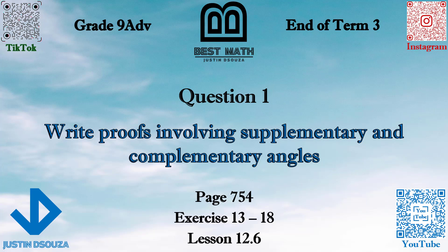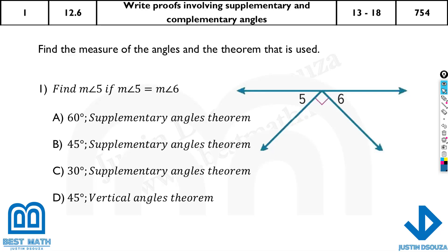In this question, we will use complementary and supplementary theorems to solve angles. We have been told here to find the measure of angle phi. You can see this is the measure of angle phi, but they have also told that measure of angle phi is equal to measure of angle 6, and this is 90 degrees.